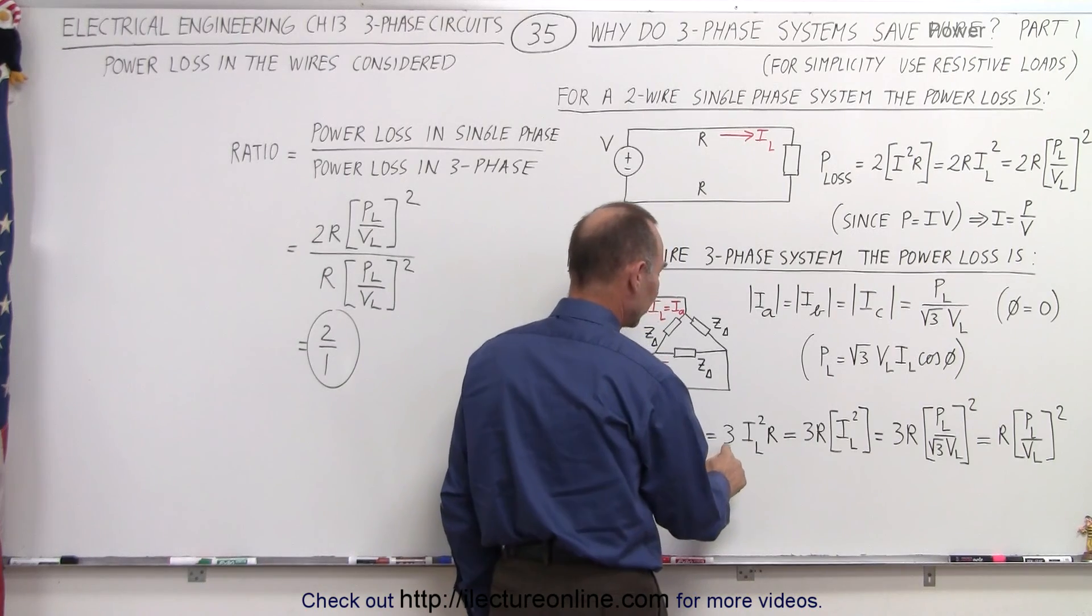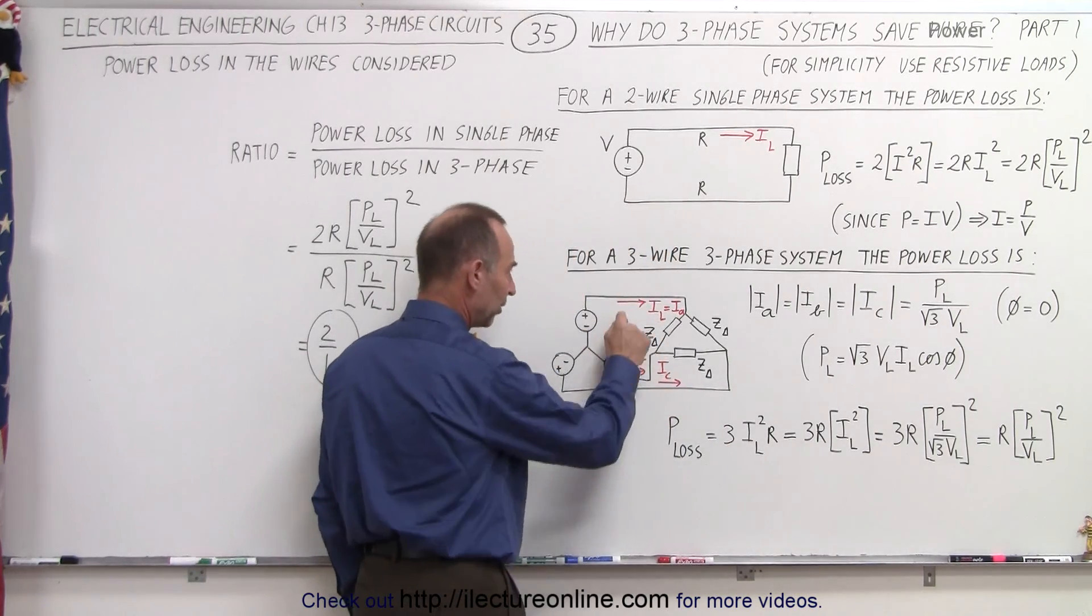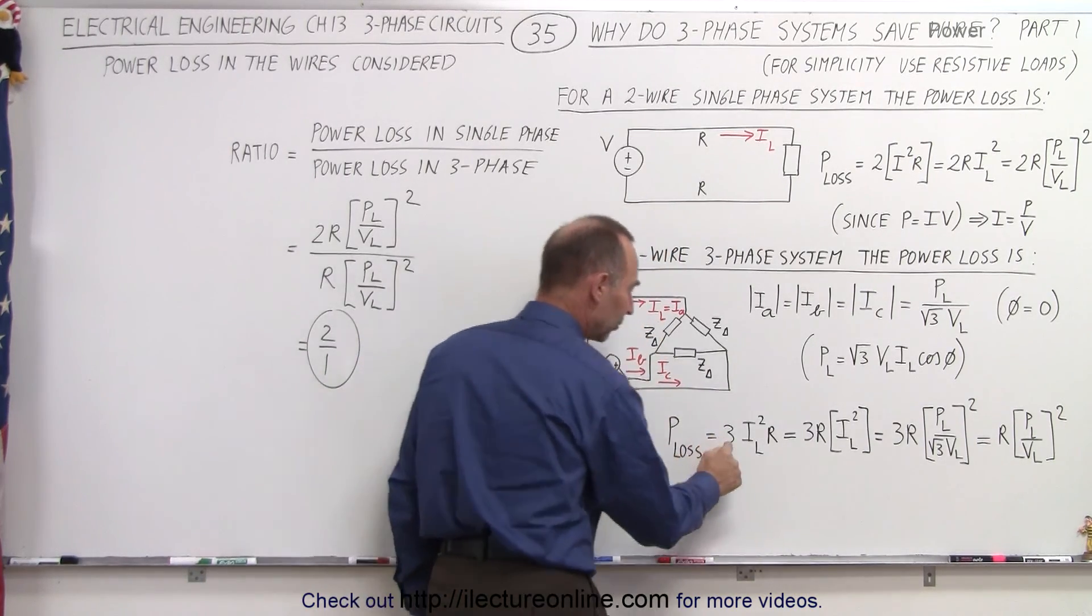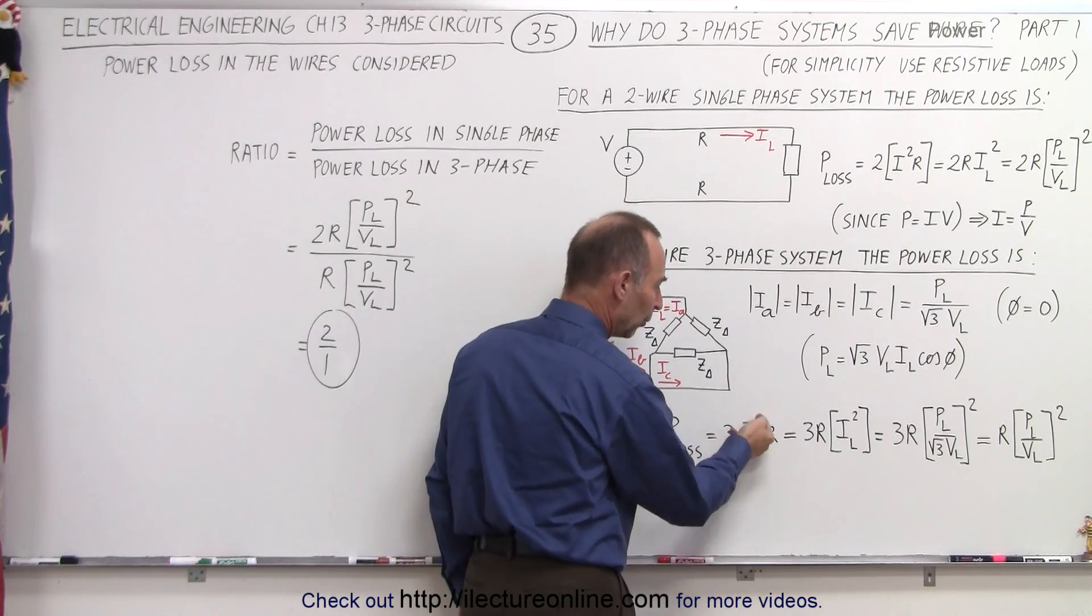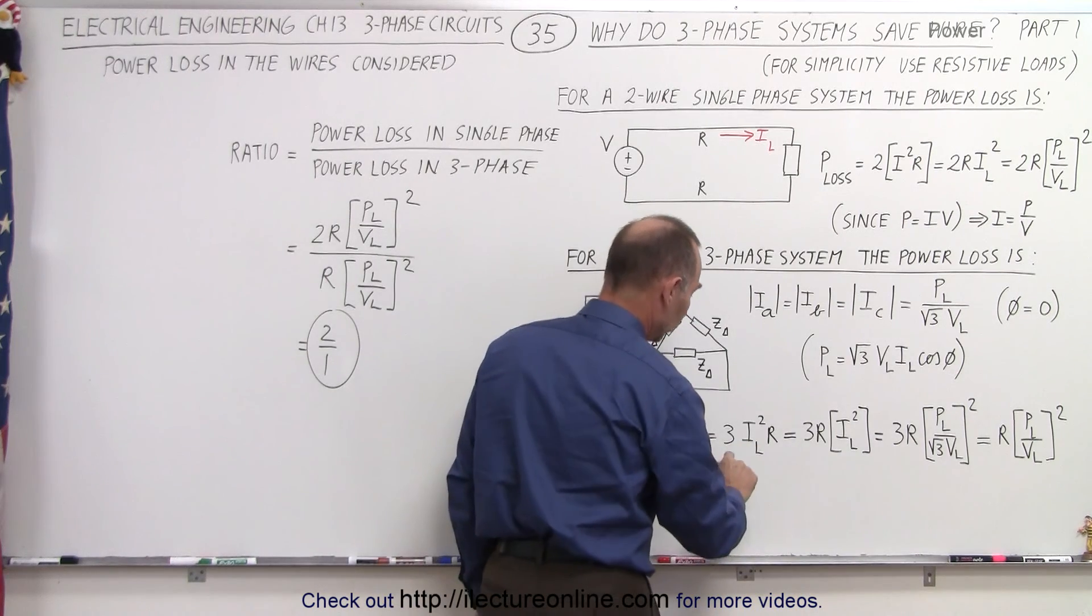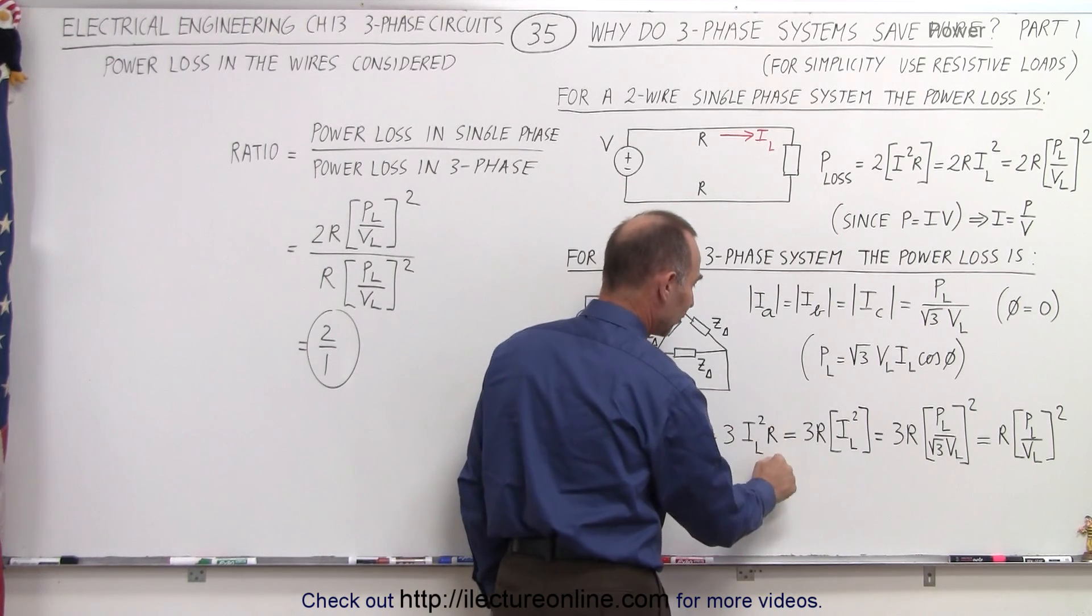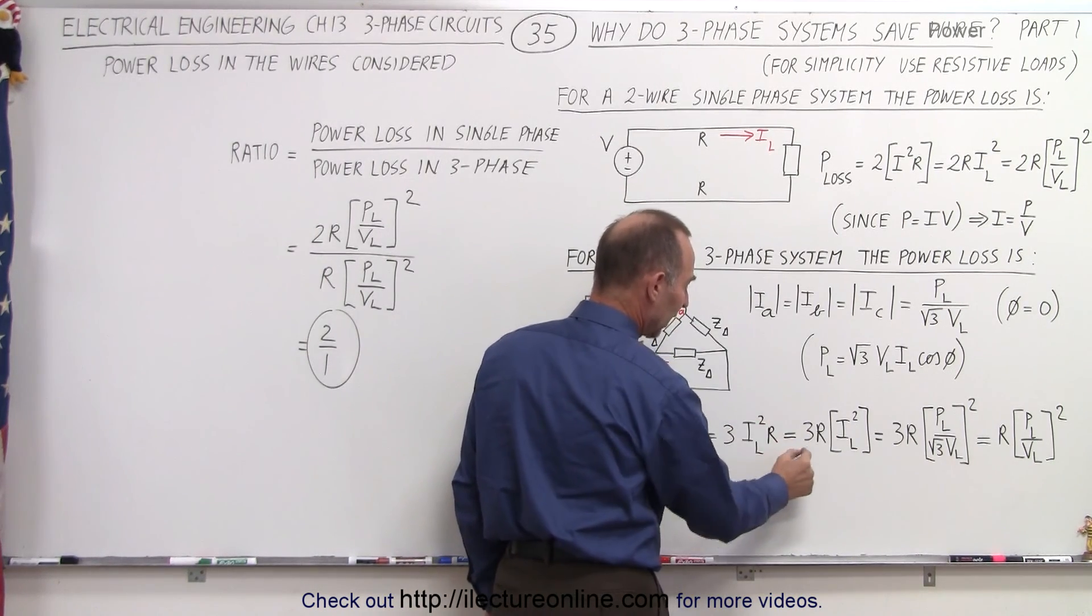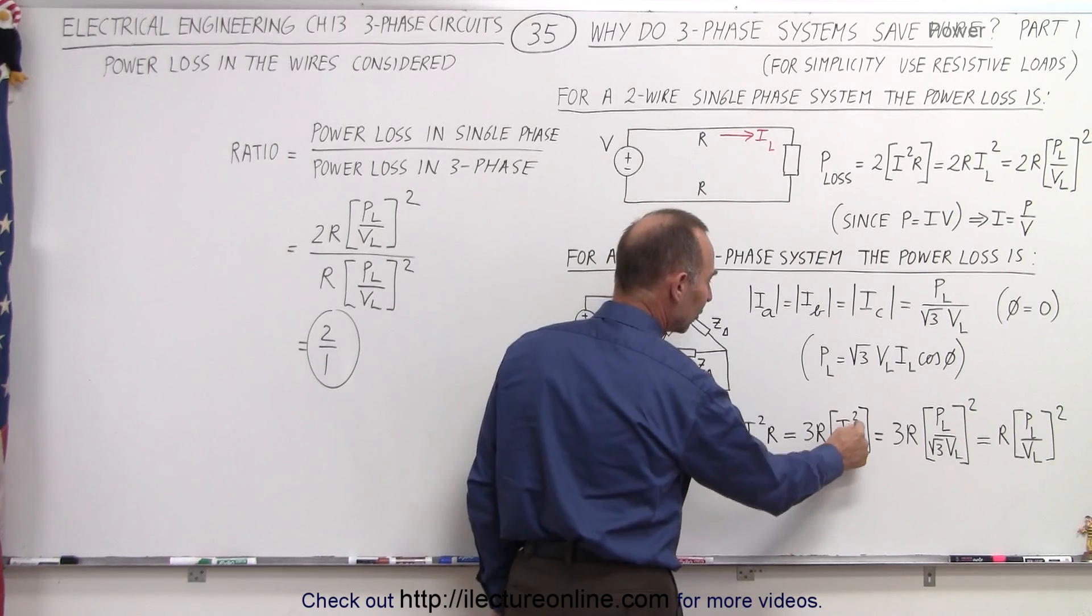Therefore, the power loss can be written as three times, because now there's three wires, one, two, three. It's three times I squared R. Of course, for I, we have to use the line current, the current leading to the load, so it's three times the line current squared times R. Rearranging the terms again, it's 3R times I squared.